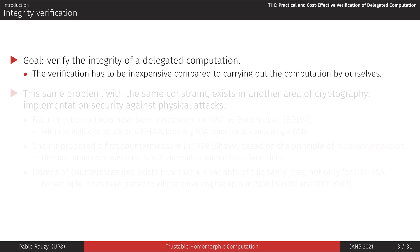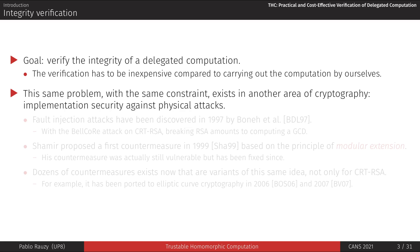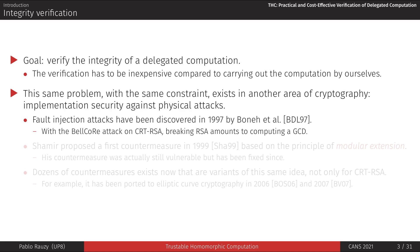This same problem exists in another area of cryptography, where it has been solved years ago. Fault injection attacks consist in attacking a cryptosystem implementation by tampering with intermediate values, with the goal of exploiting the incorrect final result to facilitate breaking the cryptosystem. These attacks were discovered and put in practice in 1997 on an optimization of RSA using the Chinese remainder theorem, used in constrained environments such as credit cards.